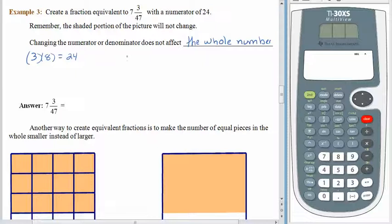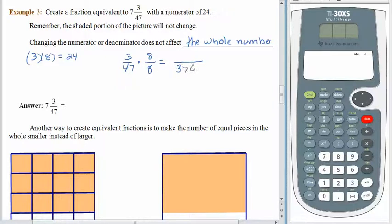Alright, here we go. Let's just focus on the fraction: three forty-sevenths. Multiplying the numerator by eight, multiplying the denominator by eight. Forty times eight is three hundred twenty, seven times eight is fifty-six — that gives us three hundred seventy-six pieces. And three times eight is twenty-four. So in the end we still have seven wholes, but instead of saying three out of forty-seven pieces are shaded, we now have twenty-four out of three hundred seventy-six pieces shaded.